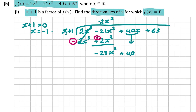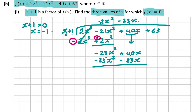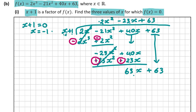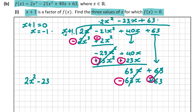Bring down plus 40x. Dividing again: x into minus 23x squared is minus 23x. Minus 23x multiplied by x is minus 23x squared; minus 23x multiplied by 1 is minus 23x. Change the signs again to cancel — so 40x plus 23x gives 63x. Bring down the 63: x into 63x is plus 63. 63 multiplied by x is 63x; 63 multiplied by 1 is plus 63. Change the signs and cancel. So our quadratic is 2x squared minus 23x plus 63.